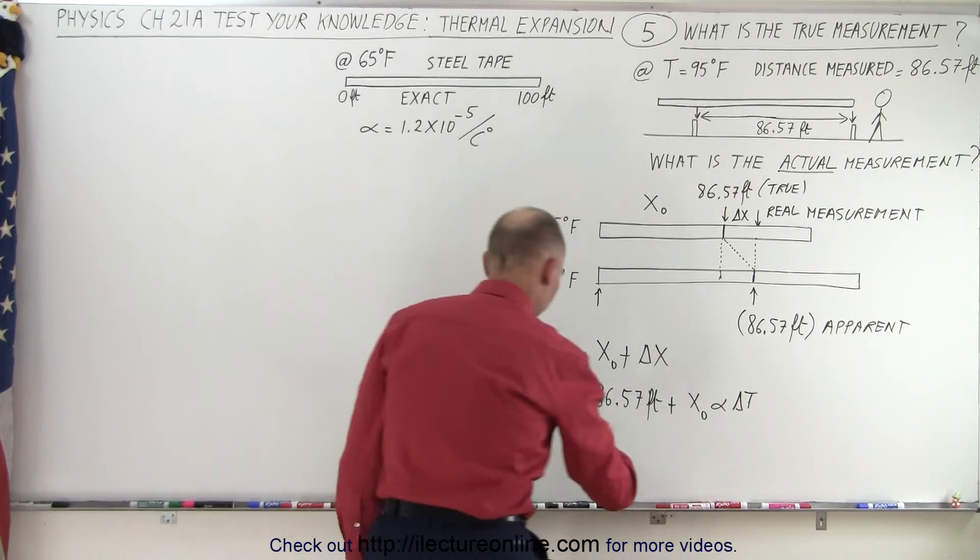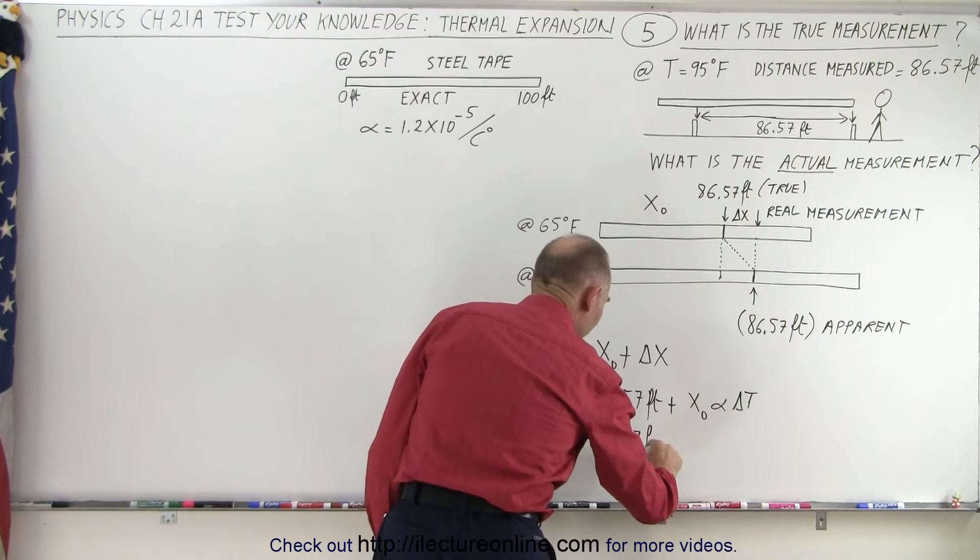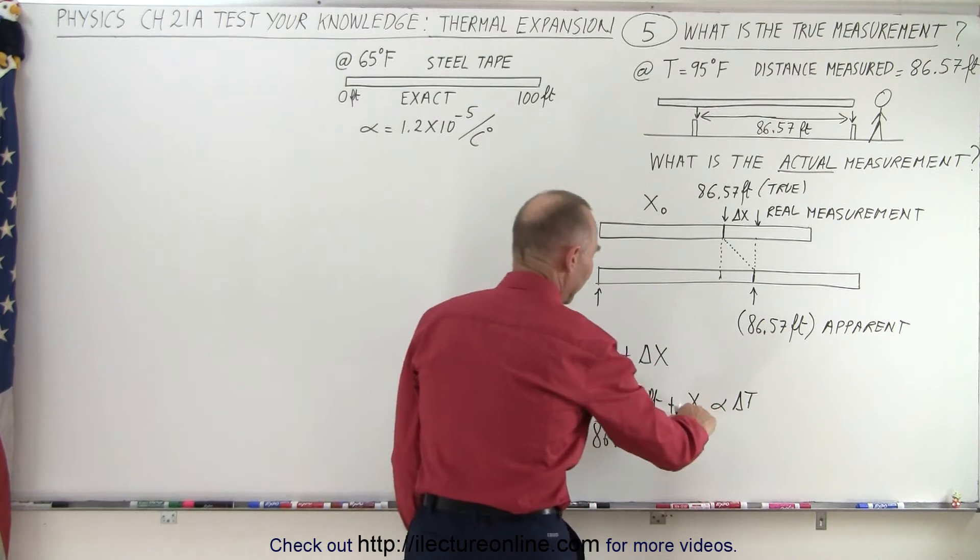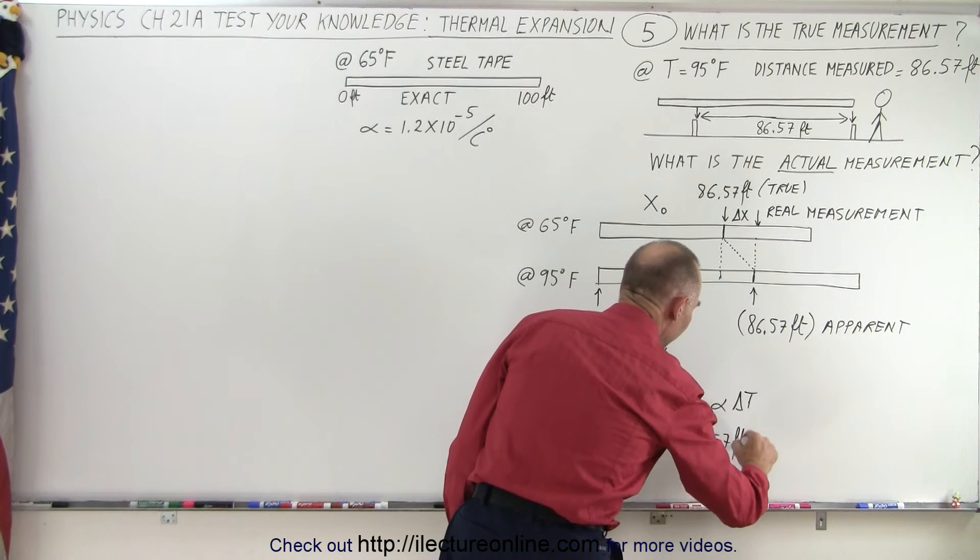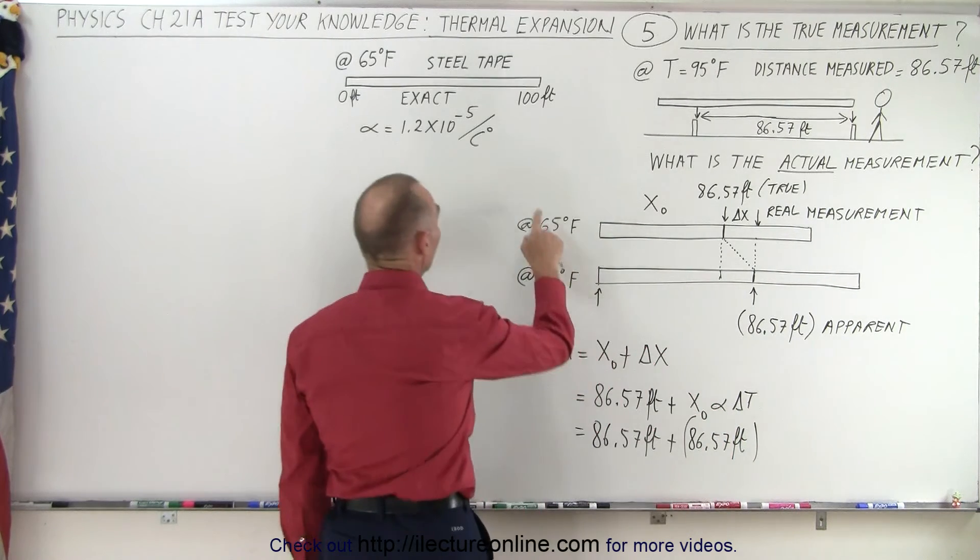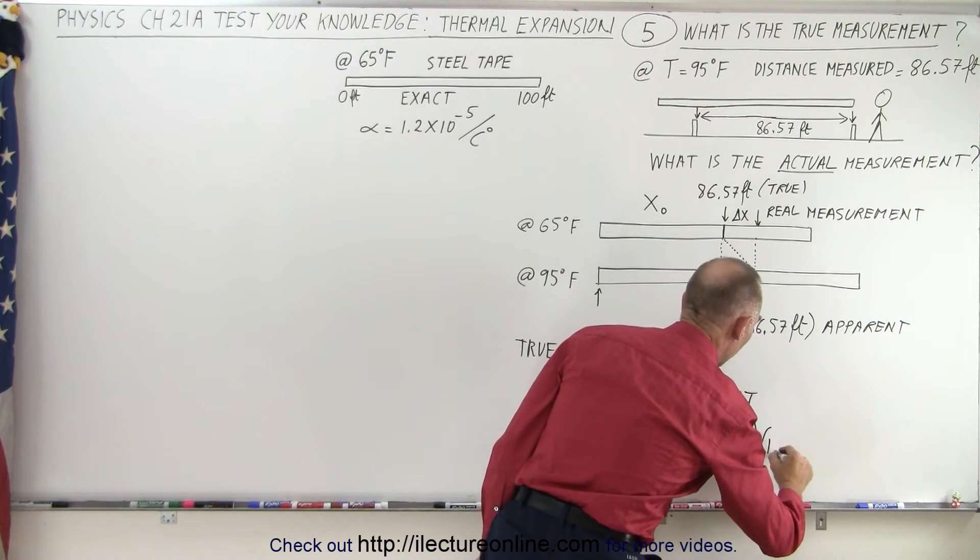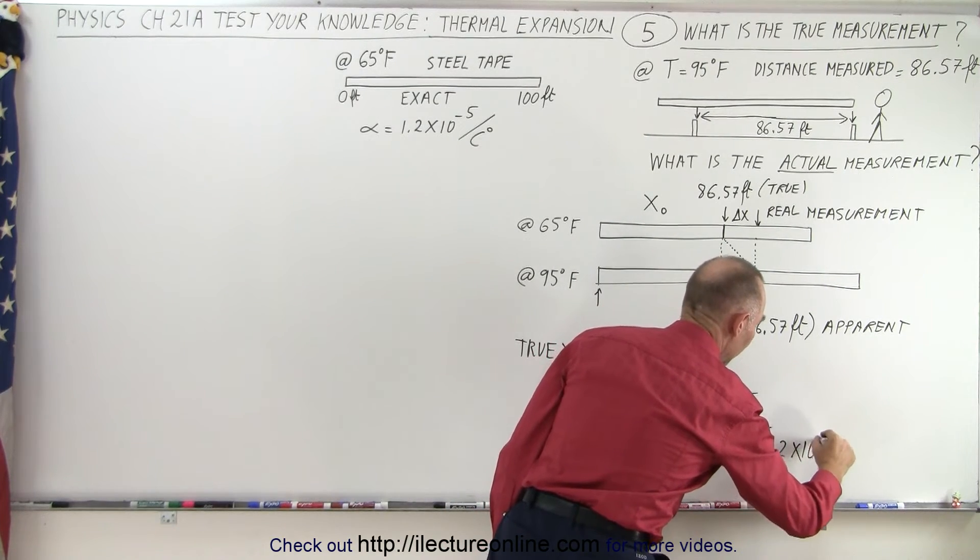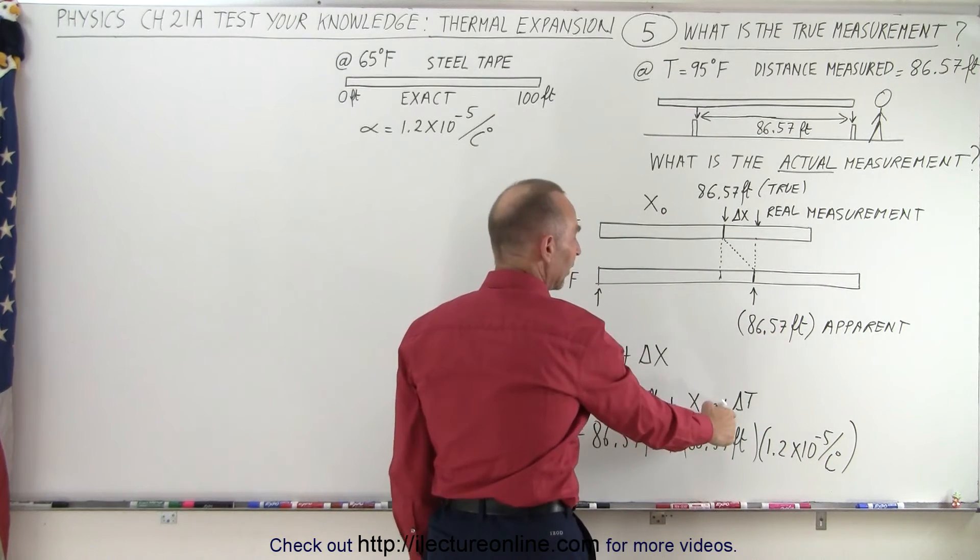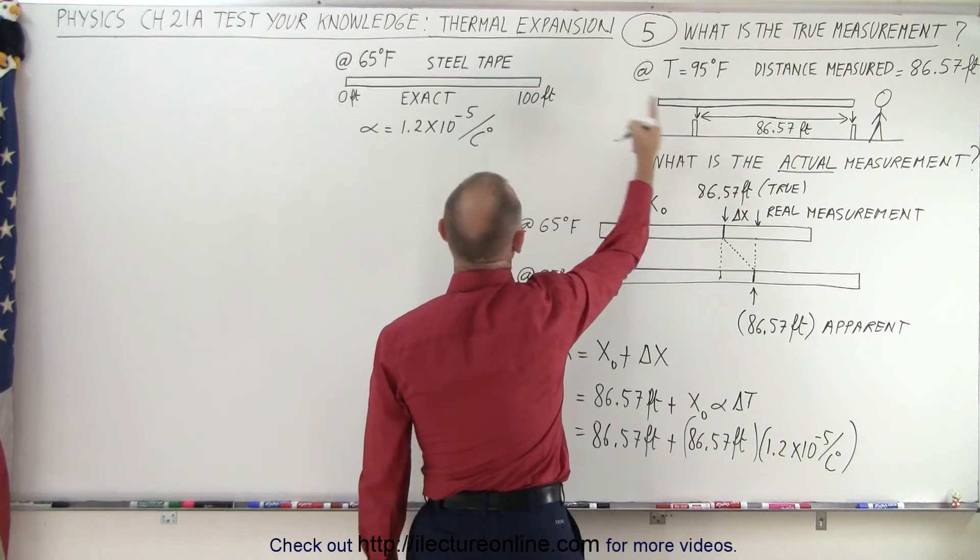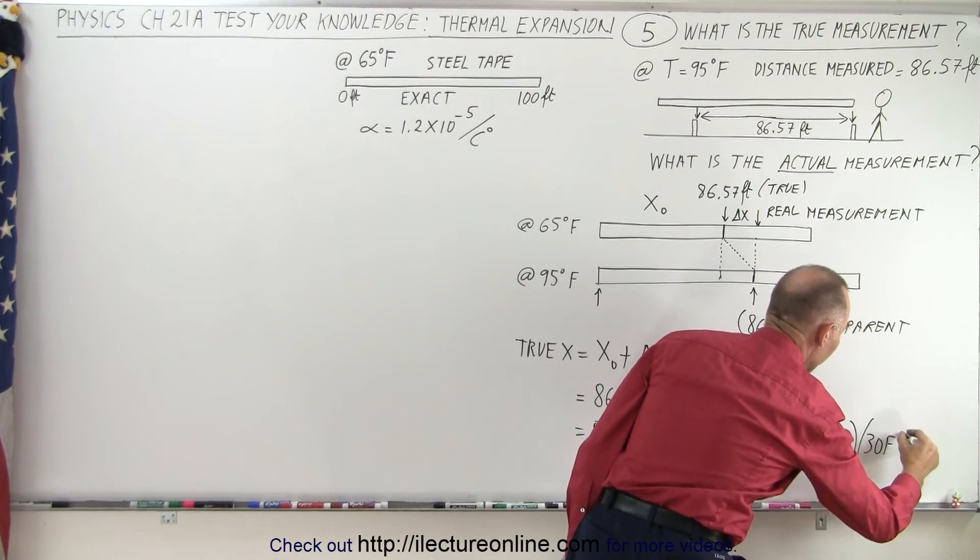All right, so this would be 86.57 feet, plus x sub naught, which is 86.57 feet, times the linear coefficient of expansion, which is 1.2 times 10 to the minus 5 per centigrade degree. And then the delta t would be the difference in temperature, which is 30 Fahrenheit degrees.